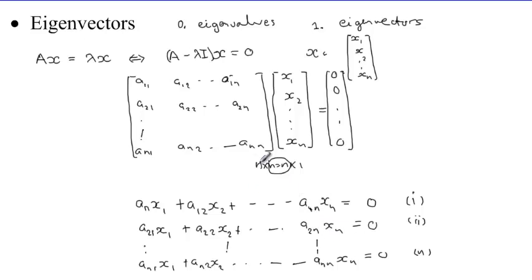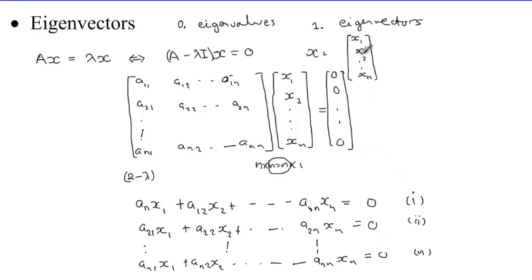So when we look at the expression A minus lambda·I applied to x equals zero, we must decode it and see that it generates n equations. If this is a square matrix, the number of rows equals the number of columns. Then if we know our lambda, solving this system — finding components x1, x2, up to xn — is actually the process of finding the eigenvector. Okay, this all sounds theoretic.